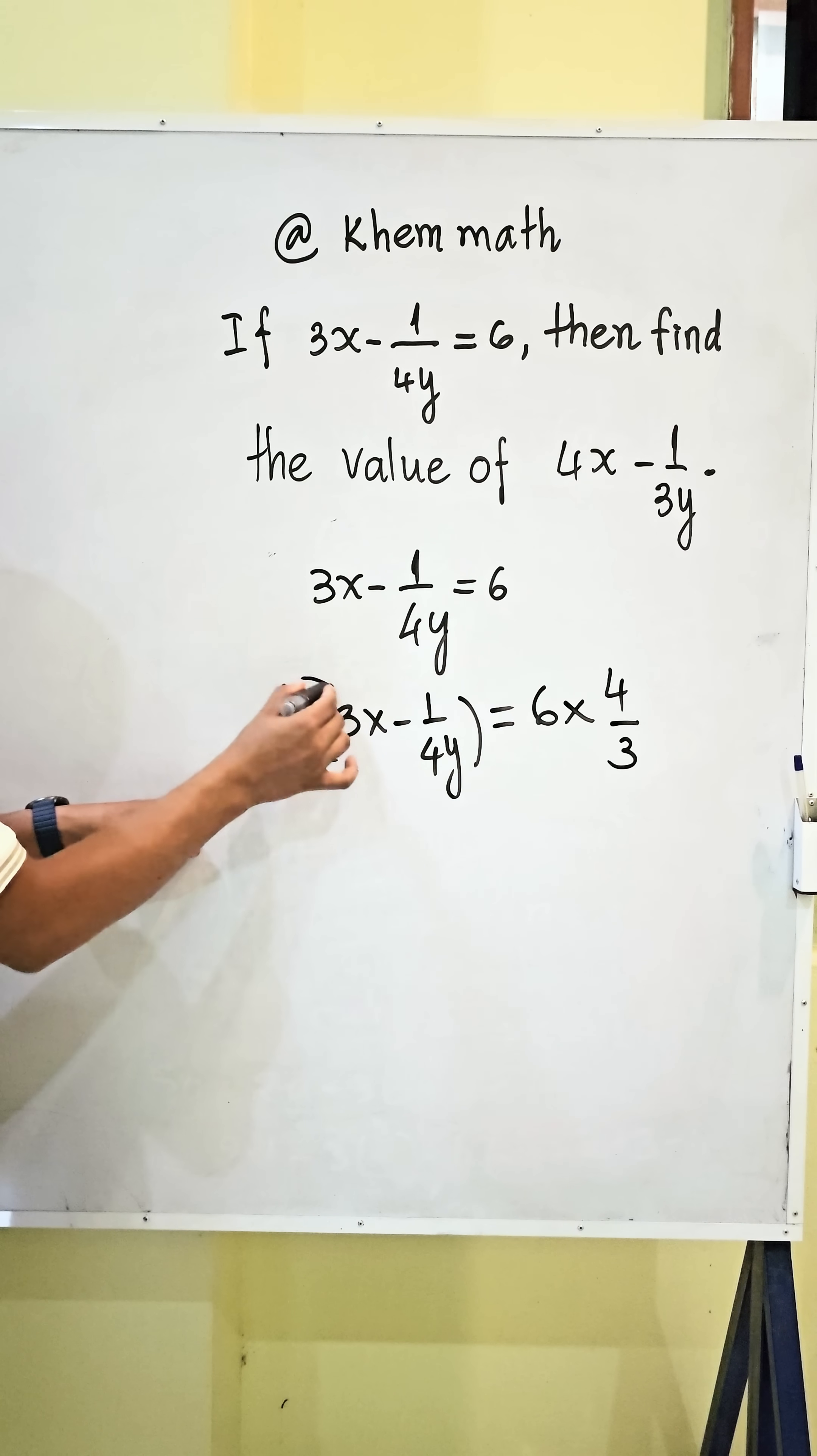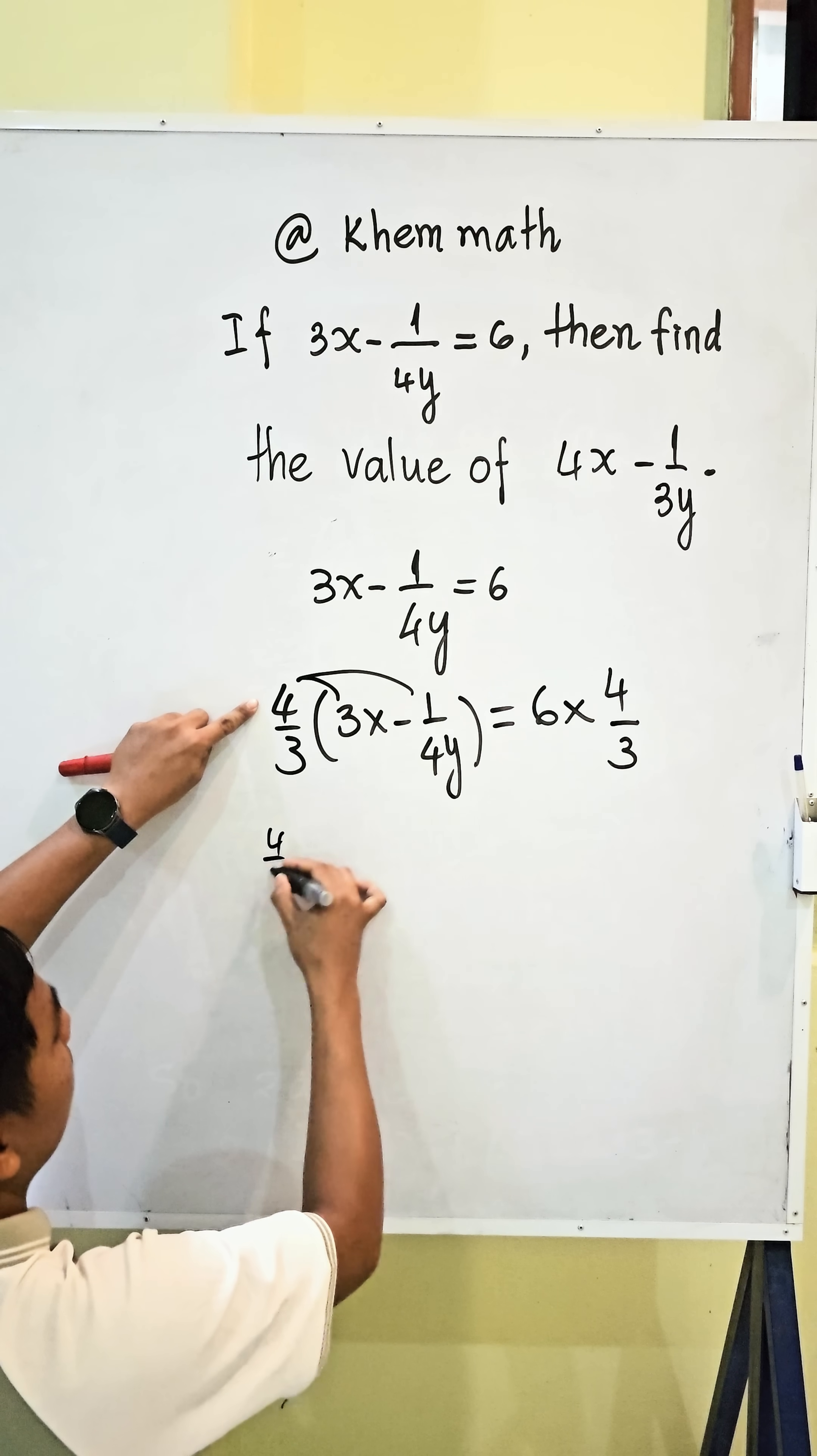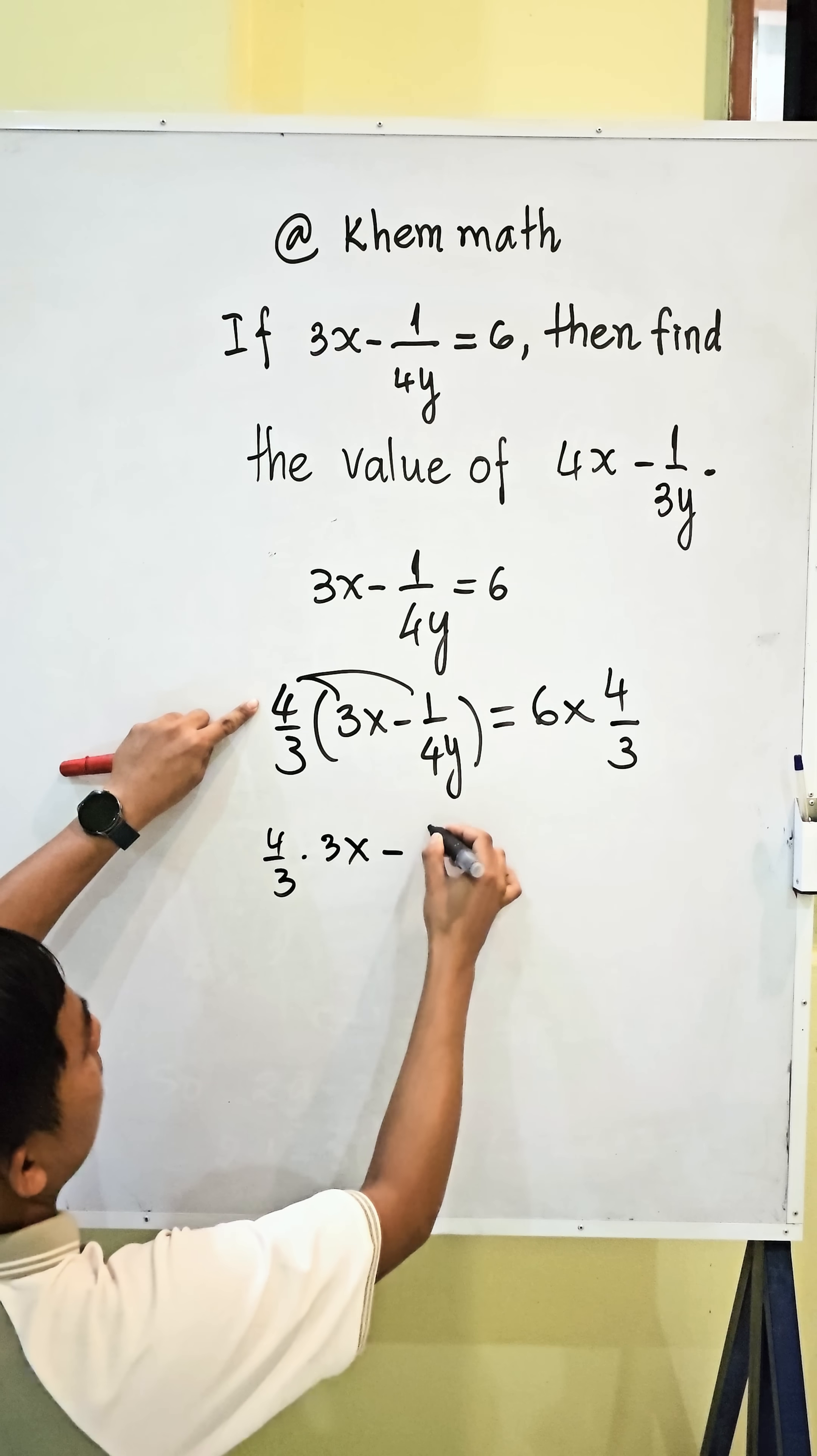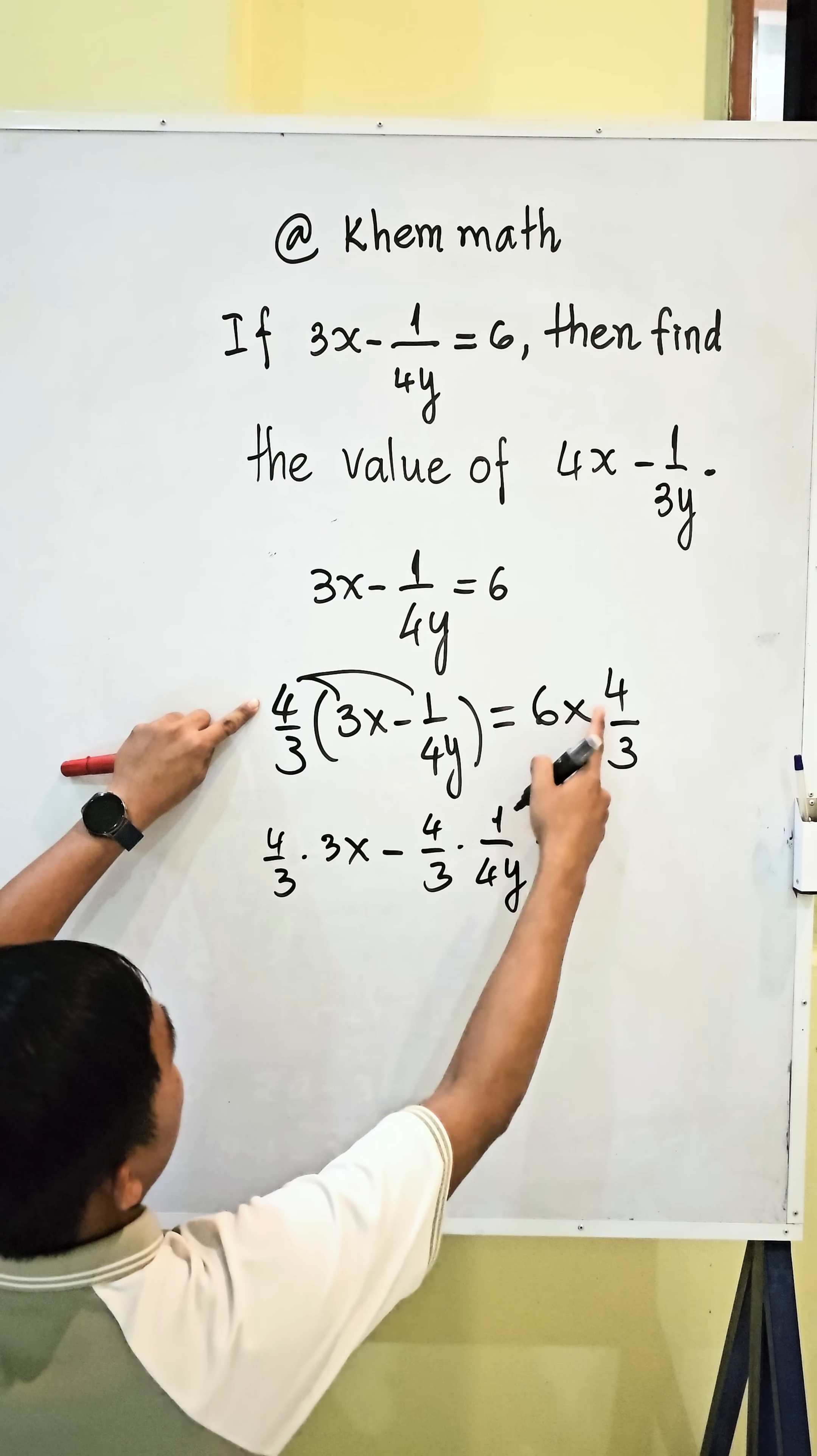And here, we multiply in. So, we get this equal 4 divided by 3 times 3x minus 4 divided by 3 times 1 divided by 4y, and equal this,